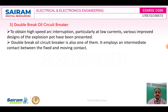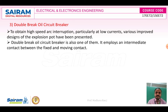In the double break oil circuit breaker, there are two breaks in the circuit breaker. This type provides high-speed arc interruption and is suitable for low currents. Various improved designs of the expulsion pot have been developed, and the double break oil circuit breaker is one of them. It employs an intermediate contact between the fixed contact and moving contacts.